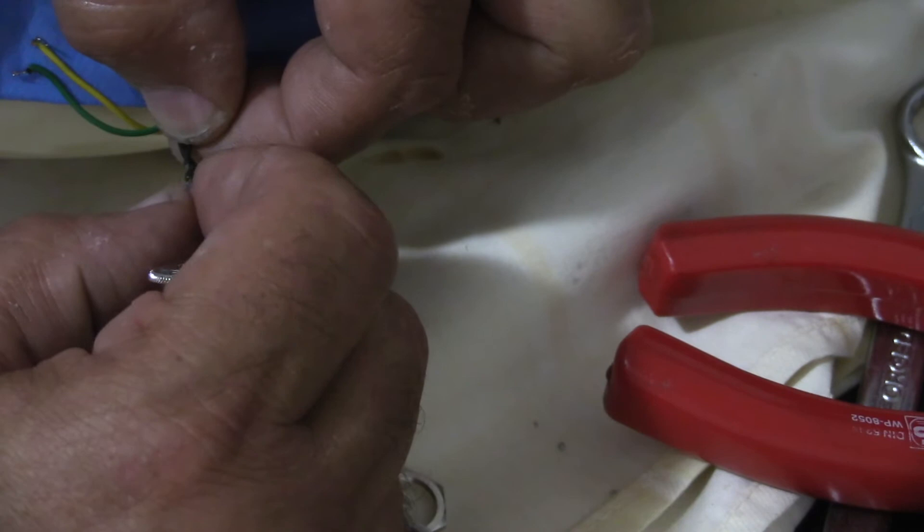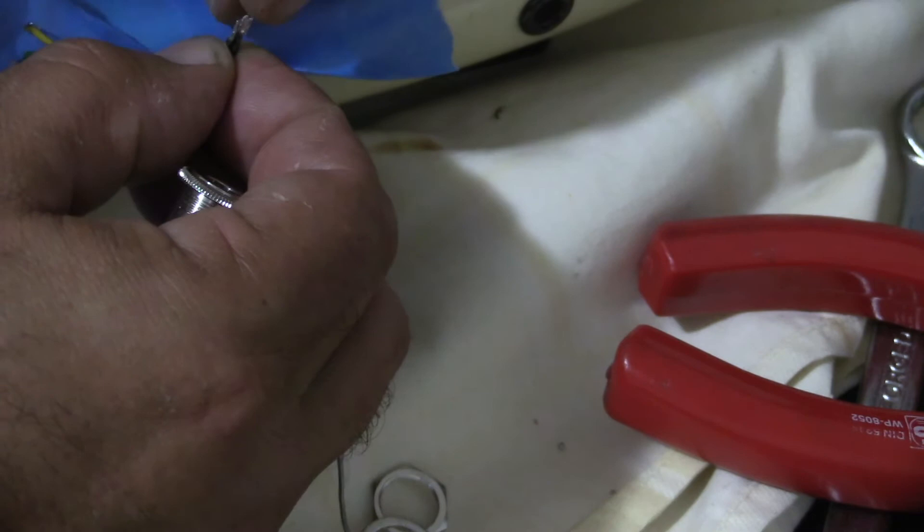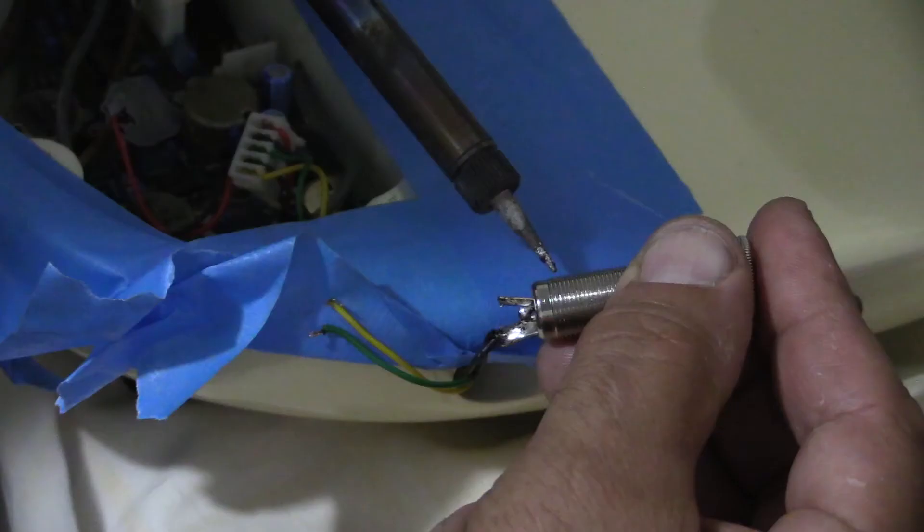Now these two cables are both earth, so they go to the long tag on the plug and the socket. Resolder the cables exactly the way that they were.